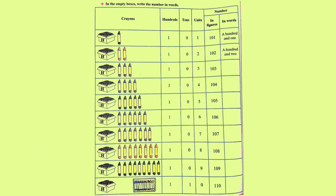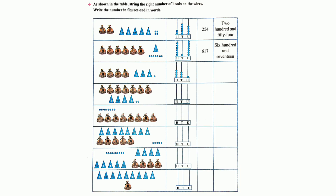Students, this is homework time — 3-digit number direction. Solve page number 8: in the empty box, write the number in words. Page number 9: as shown in the table, string the right number of bands of the ears, write the number in figures and in words. So students, complete your homework.